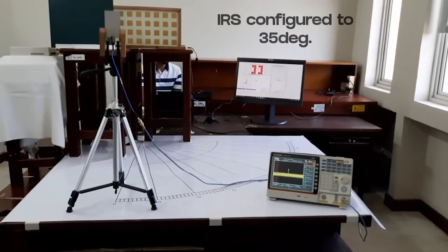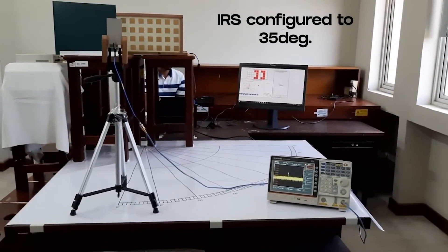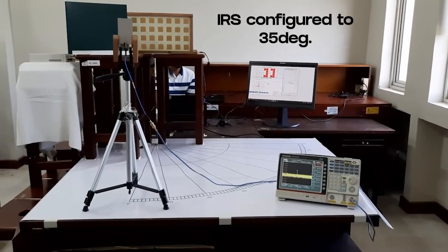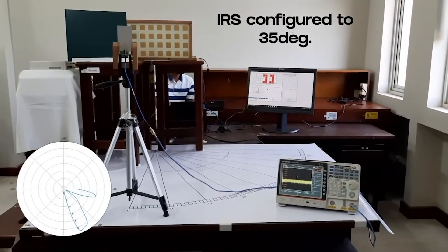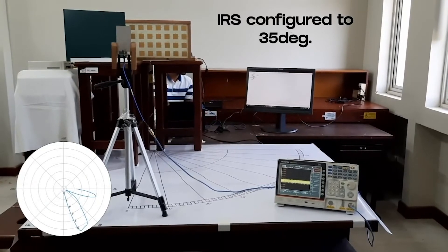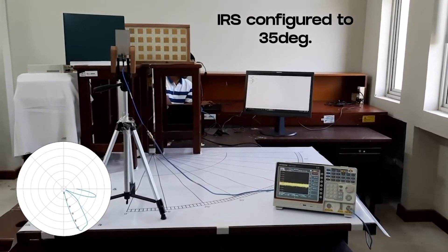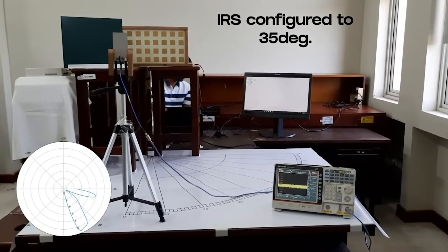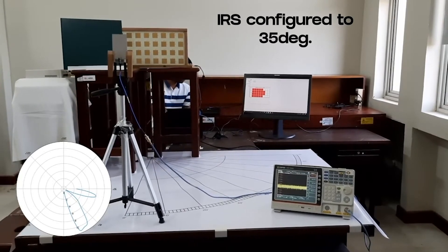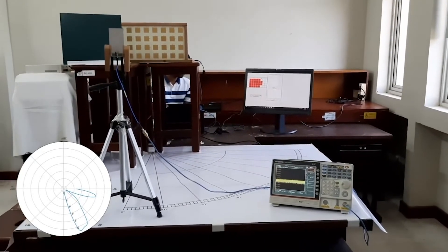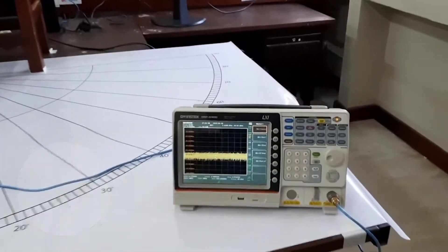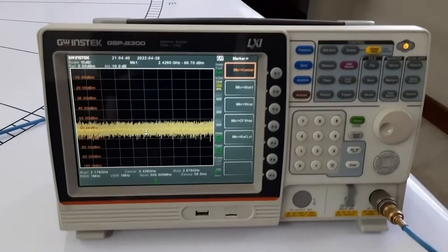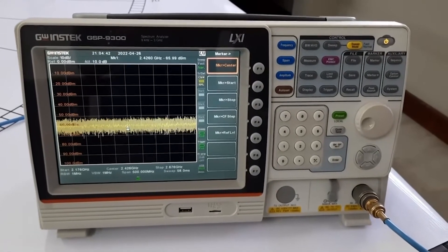And now we change the configuration of the IRS to direct the beam towards 35 degree direction. Still the receiver is at zero degree direction, and you can see the decline of the power level at the operating frequency of 2.42 GHz. You can see it is almost at the noise power level.